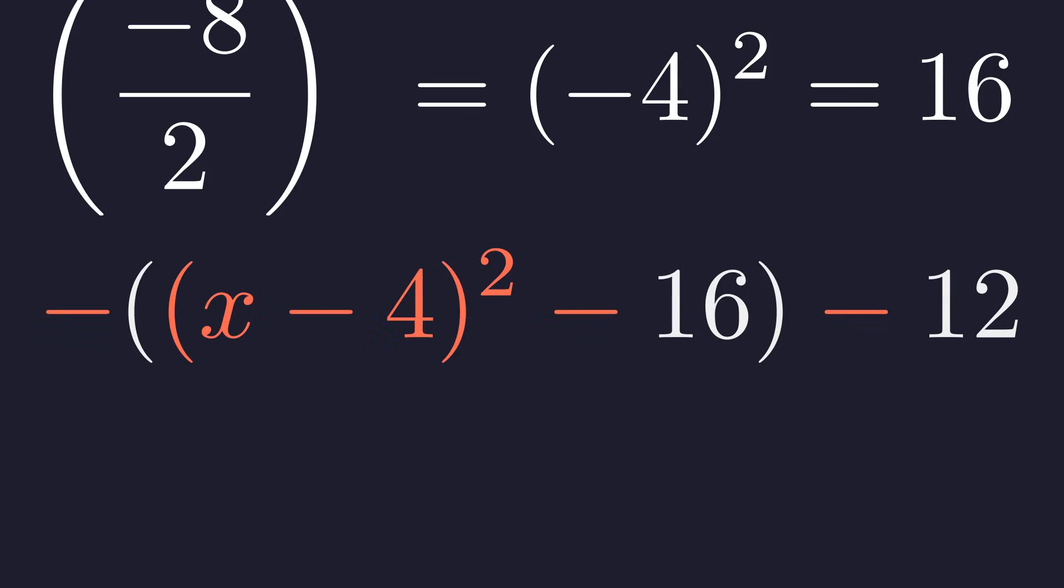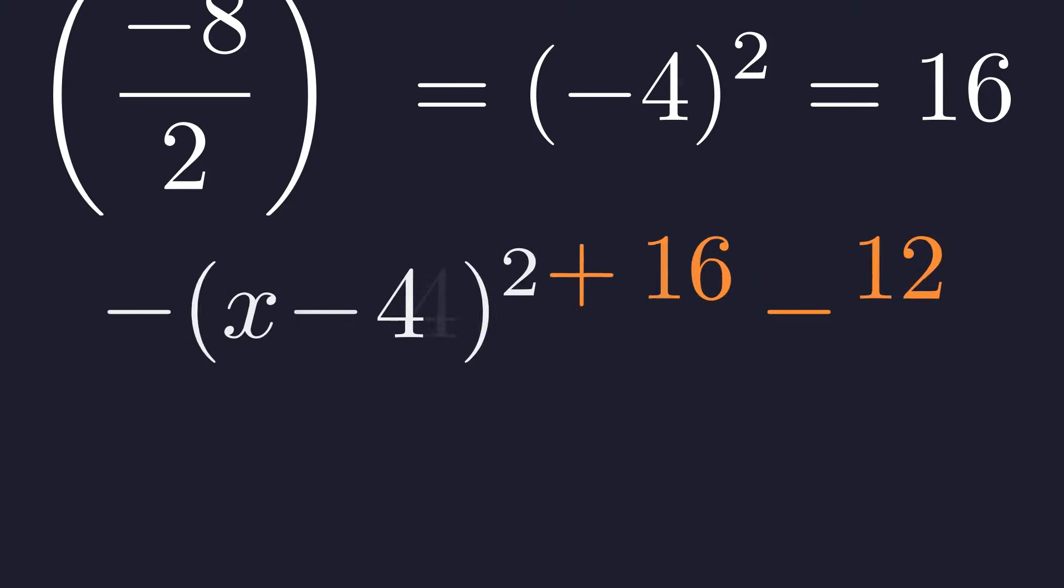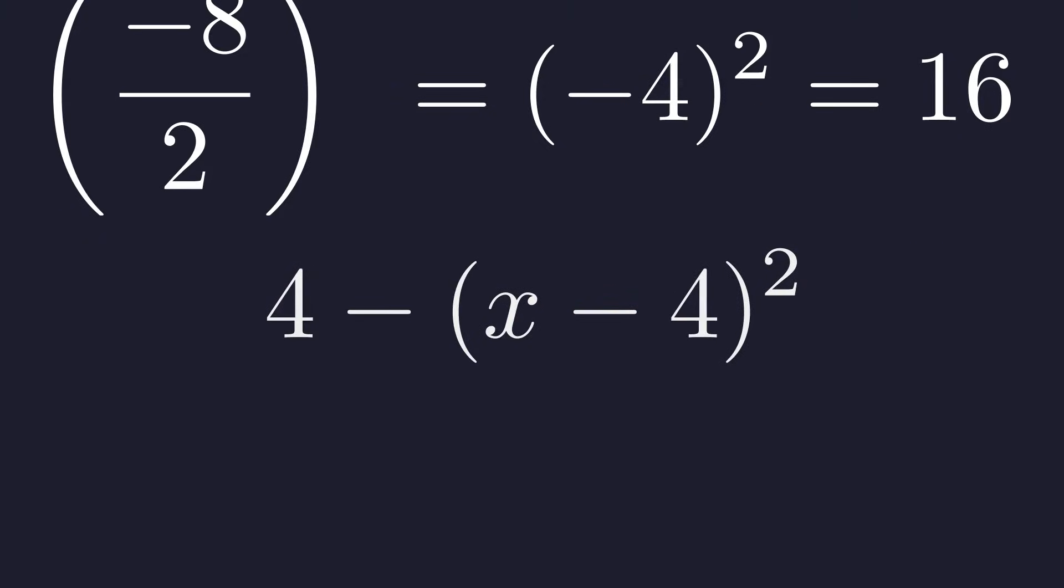Next, to simplify further, we distribute the leading negative sign back into the large parentheses. The term x minus 4 squared becomes negative, and the negative 16 becomes positive 16. The final step in this simplification is to combine the constant terms. 16 minus 12 is 4. This gives our final simplified expression, 4 minus the quantity x minus 4 squared.